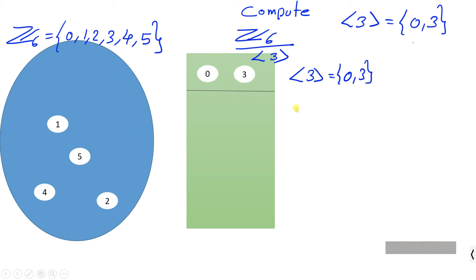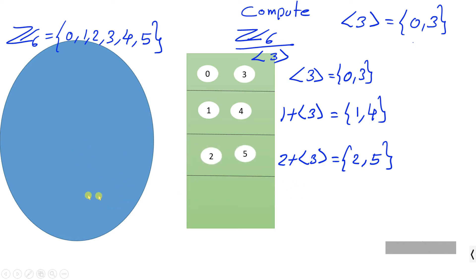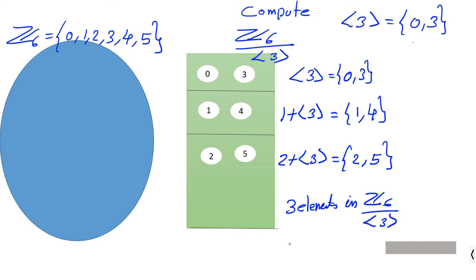The coset containing 1 has elements 1 and 4, and the coset containing 2 has elements 2 and 5. Since there are no elements left in G that do not belong to any coset, we can see there are only three cosets — that is, only three elements in the factor group Z6 over the cyclic subgroup generated by 3.